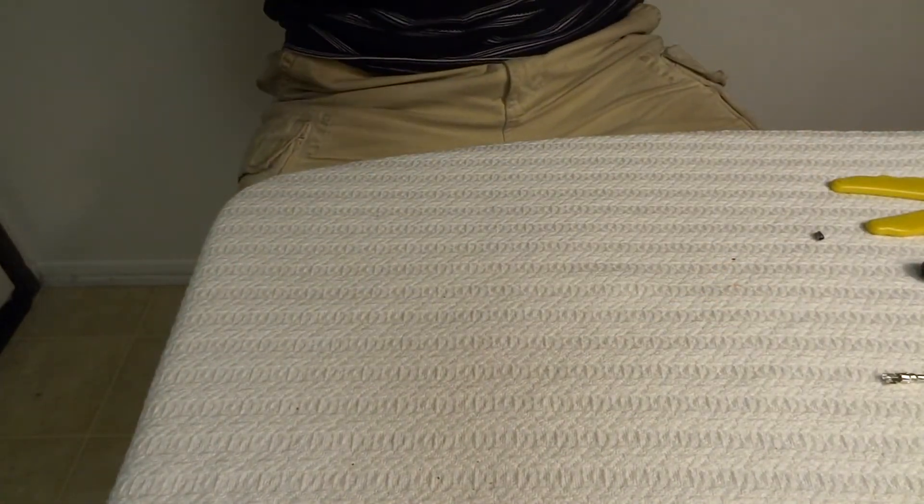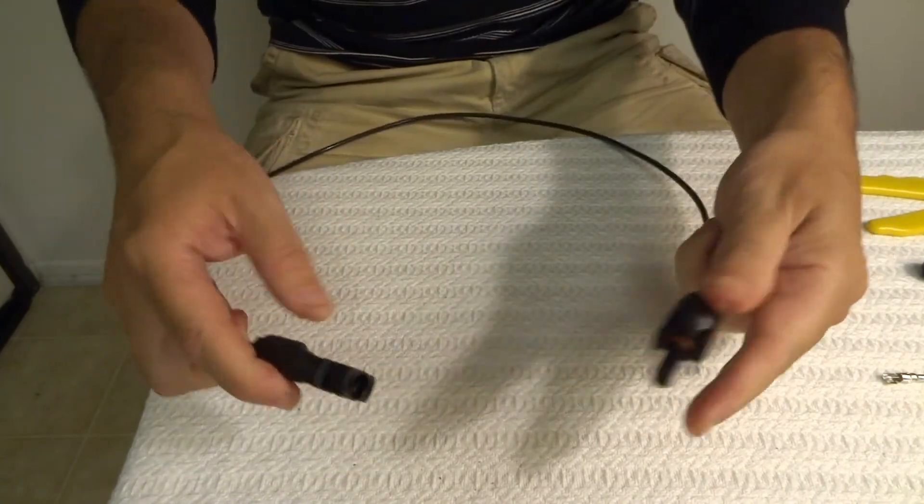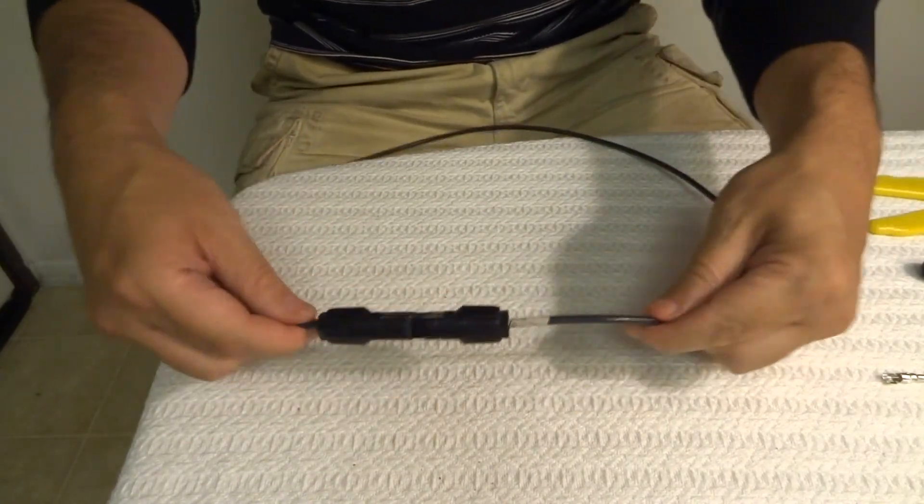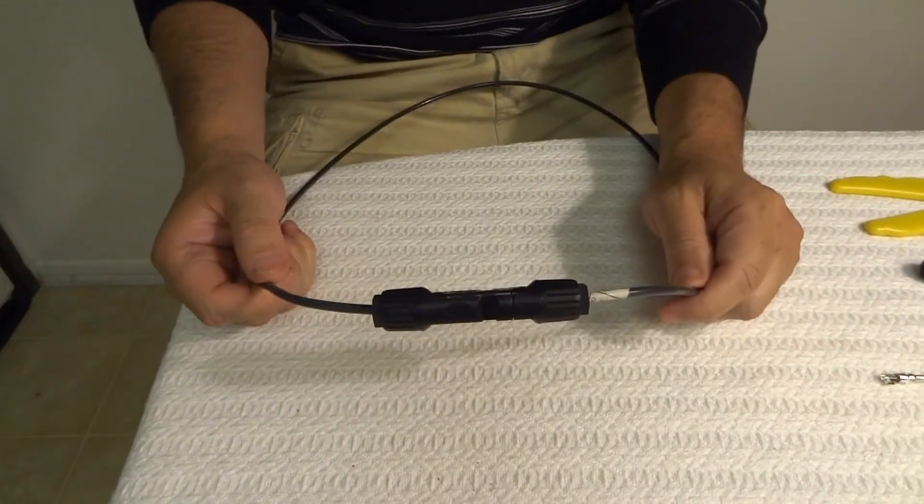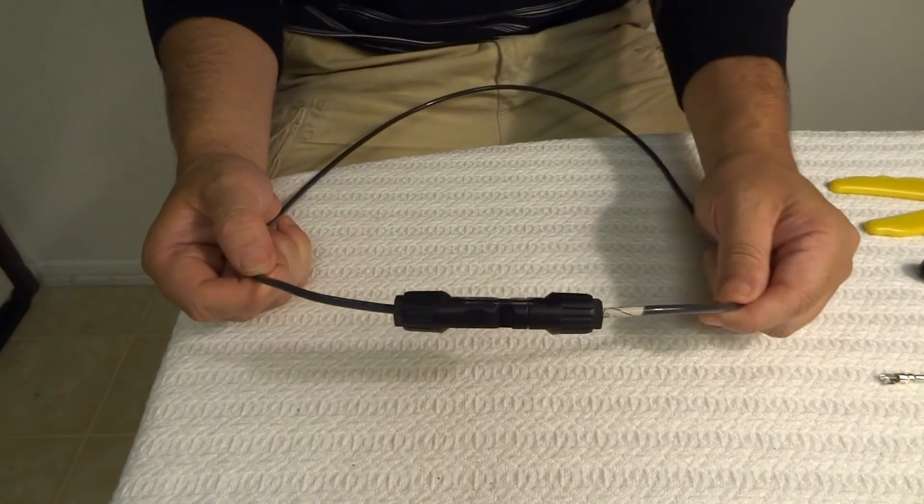So now you have your female side and you have your male side of course. And there you go. That's how you make an MC4 solar connector.